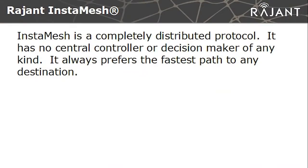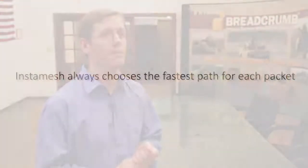InstaMesh is a completely distributed protocol. It has no central controller, no central decision maker, no one node to make a big picture of the network. And that's good for two reasons. One, it takes time to build a big picture of the network. And two, if the network's always changing, that's a lot of information that's constantly in motion to keep that up to date.